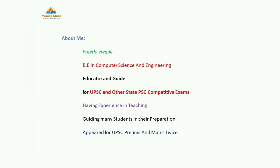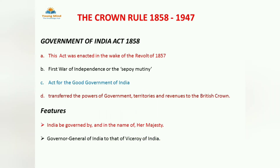In this video we are studying Crown Rule, that is from the period 1858 to 1947. Crown Rule started after the revolt of 1857. We'll discuss what steps the British government took, what developments were done, how our Constitution's preparation started, and how the base of our Constitution was prepared. In 1857 one revolution took place called the First War of Independence, as named by Vinayak Damodar Savarkar. It is also called the Sepoy Mutiny.